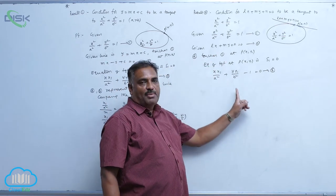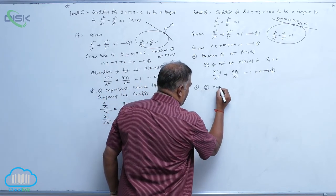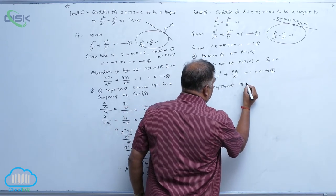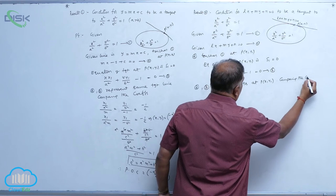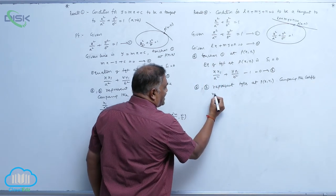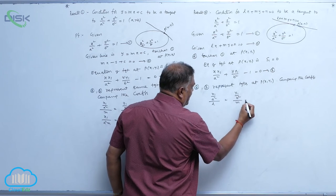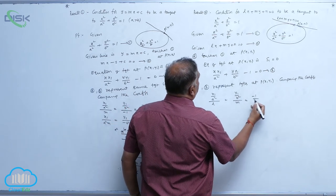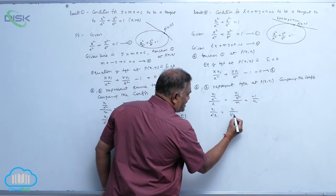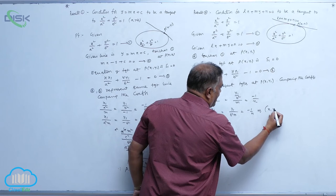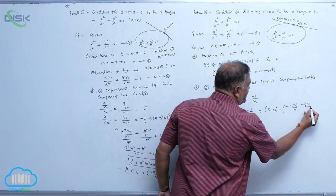Equations 2 and 3 represent tangents at P(x1, y1). Comparing the coefficients: x1/a² divided by l equals y1/b² divided by m, equals -1/n. So x1/a²·l = y1/b²·m = -1/n. Therefore, x1 = -a²l/n and y1 = -b²m/n.